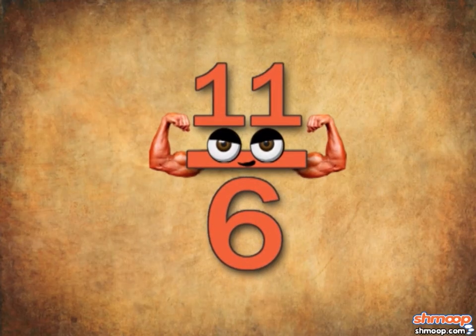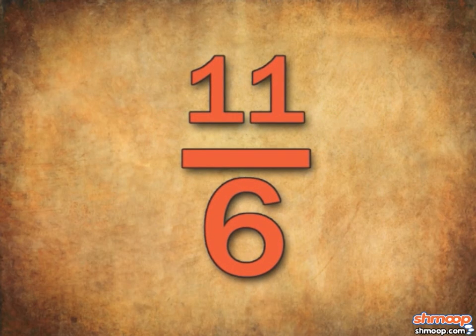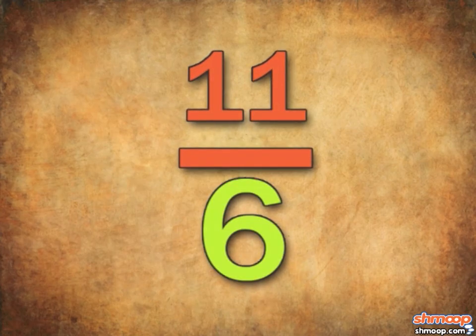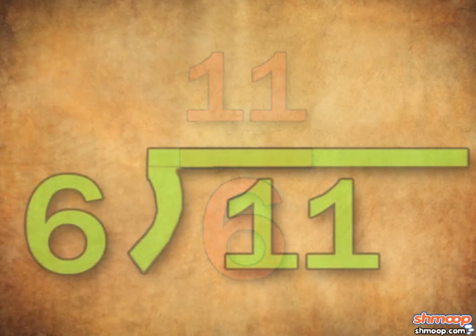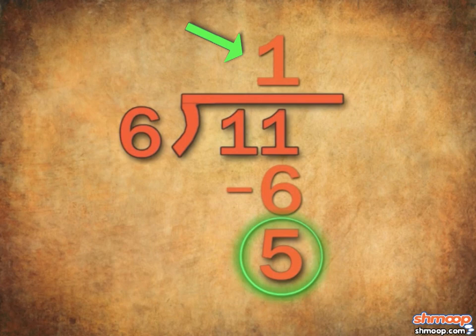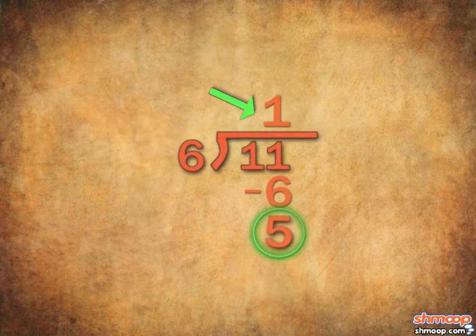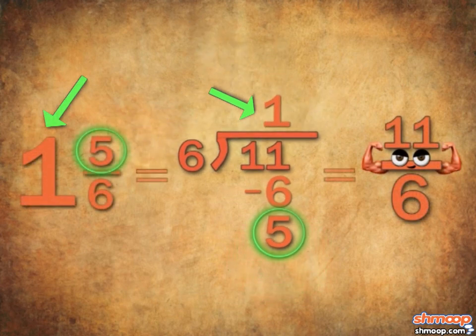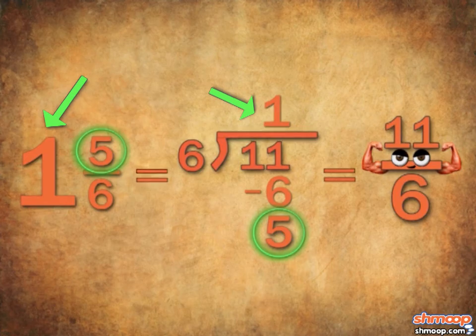We can change improper fractions into mixed numbers by dividing the numerator by the denominator. That's what fractions are, right? Division. We'll end up with a number and a remainder. The number is the whole number in front, and the remainder goes in the numerator of the fraction that follows it.